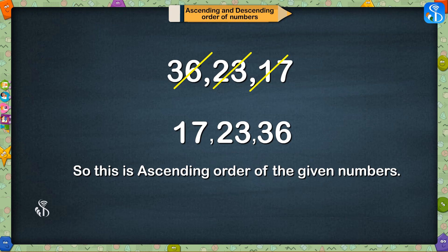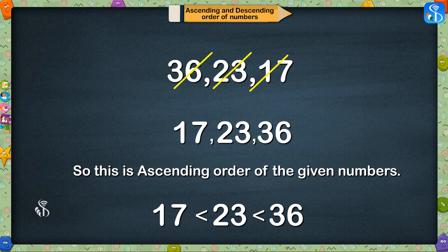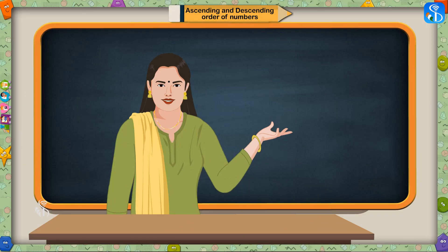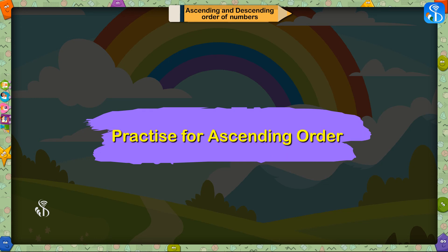So, this is the ascending order of the given numbers. We can write it like this: 17 is smaller than 23, and 23 is smaller than 36. Now, we will solve some more questions like this. Practice for ascending order.